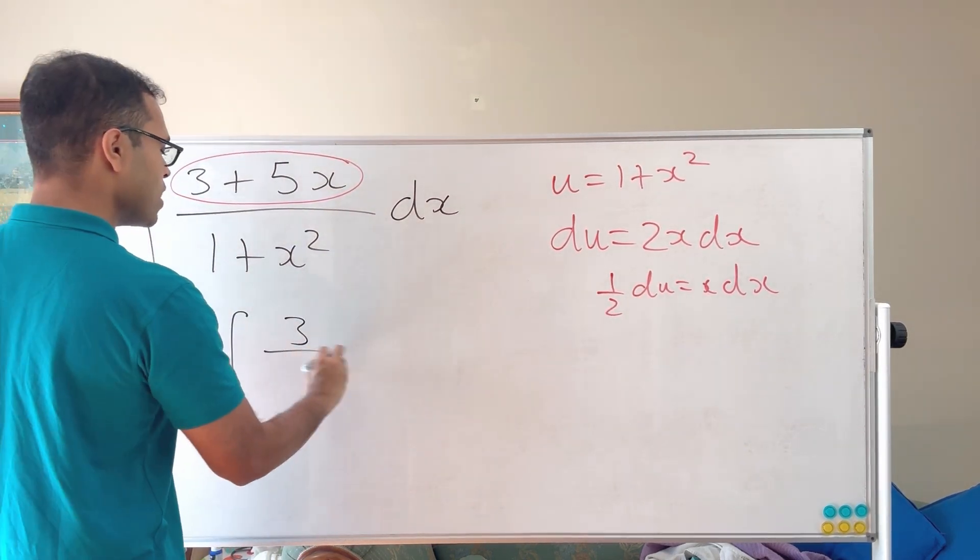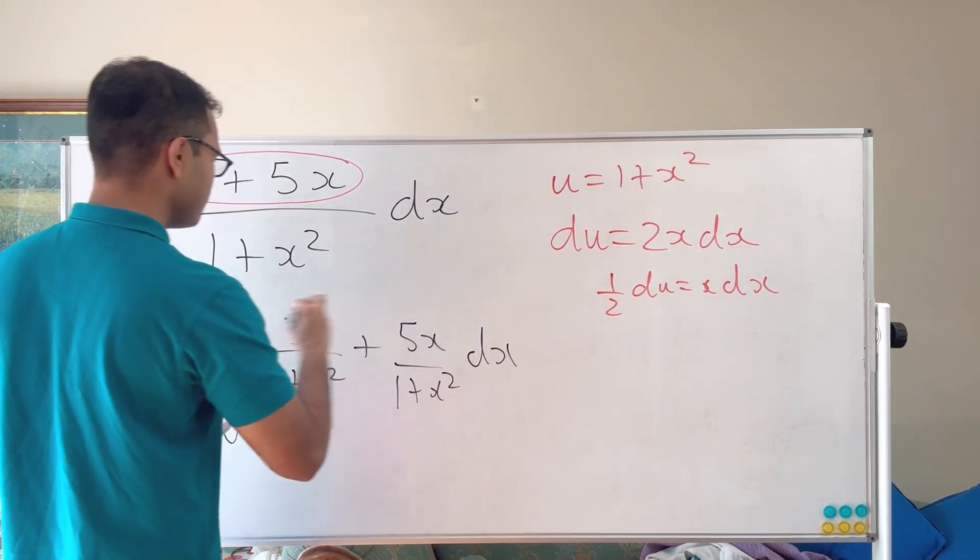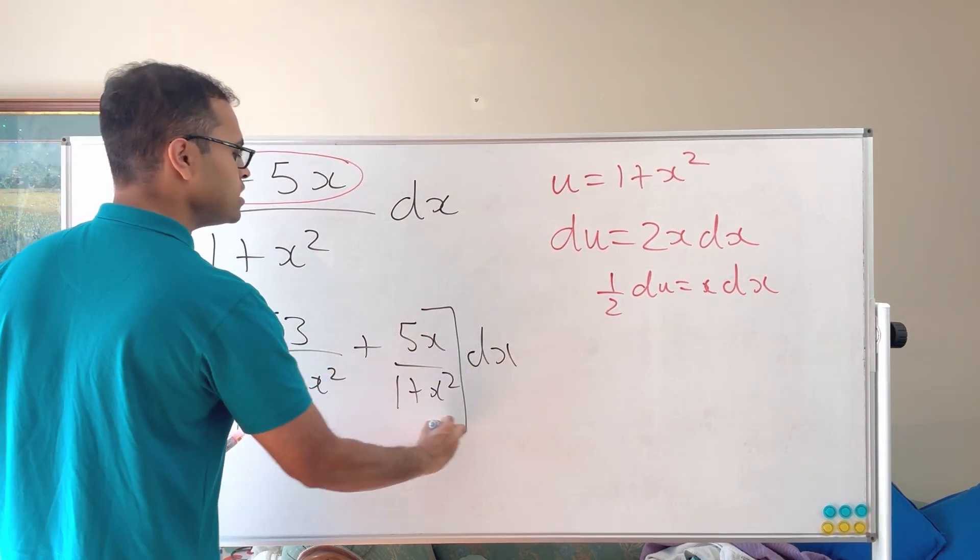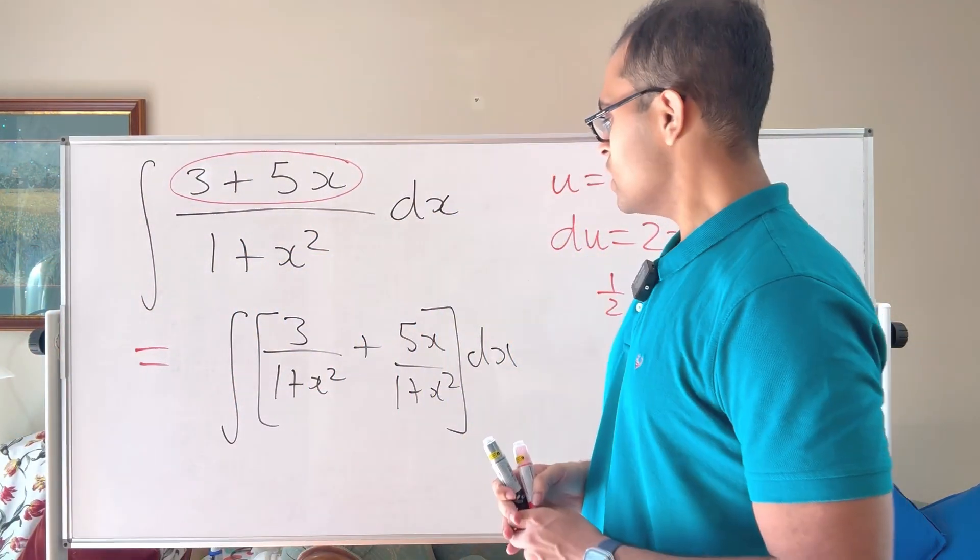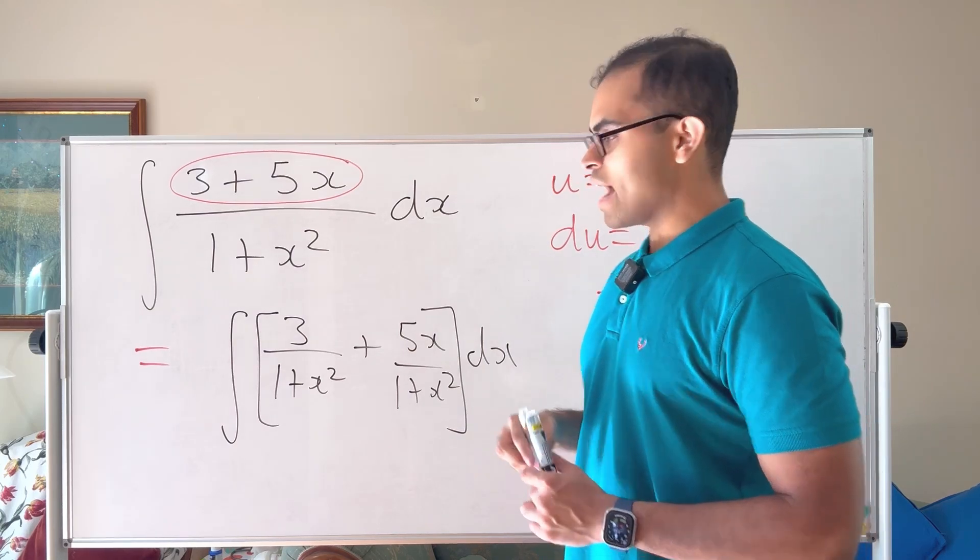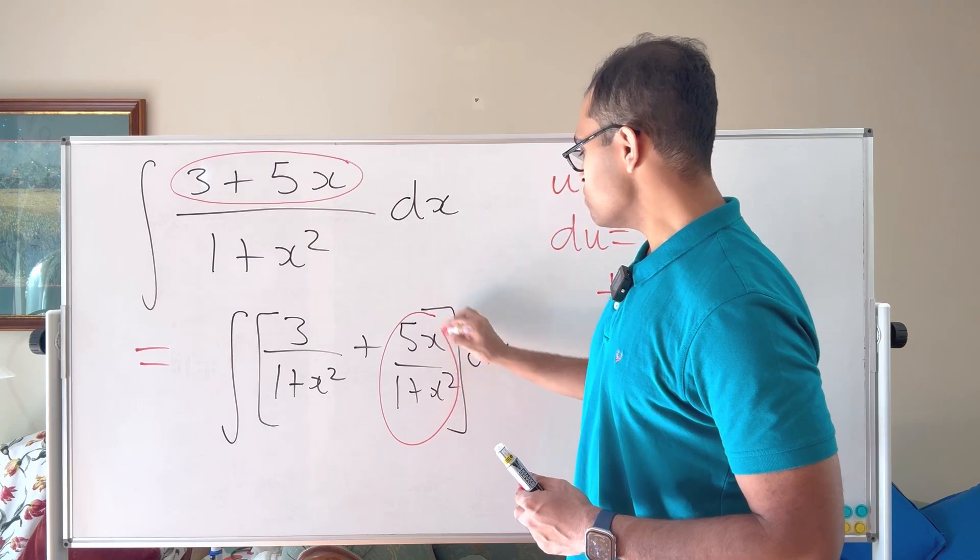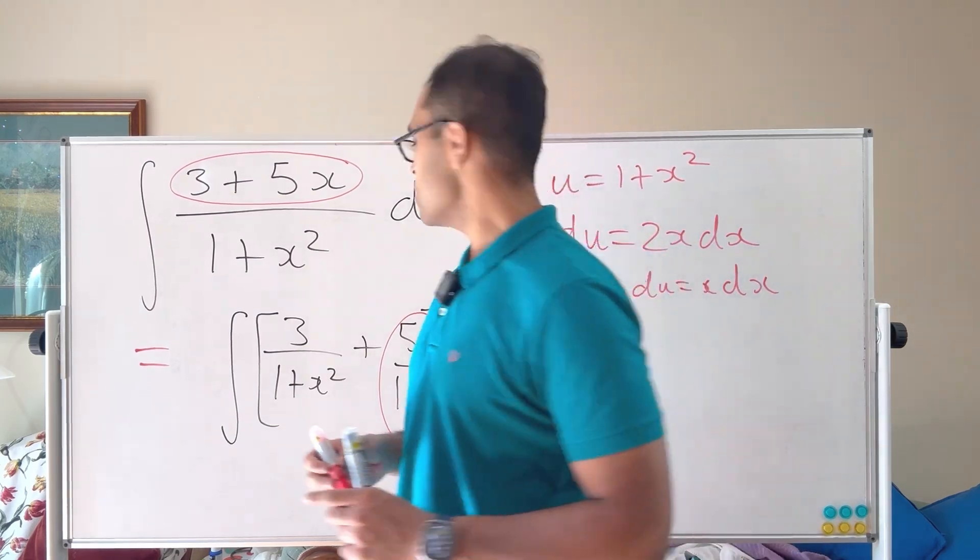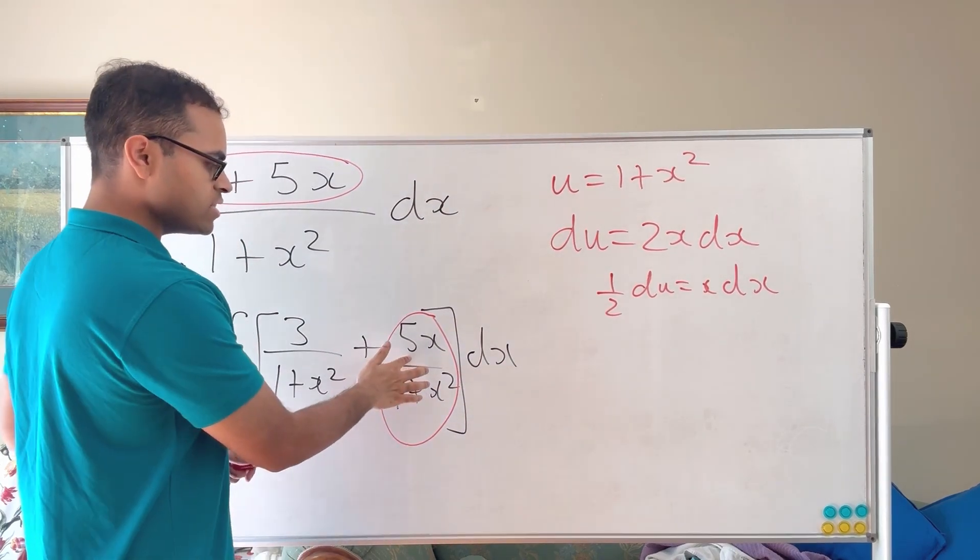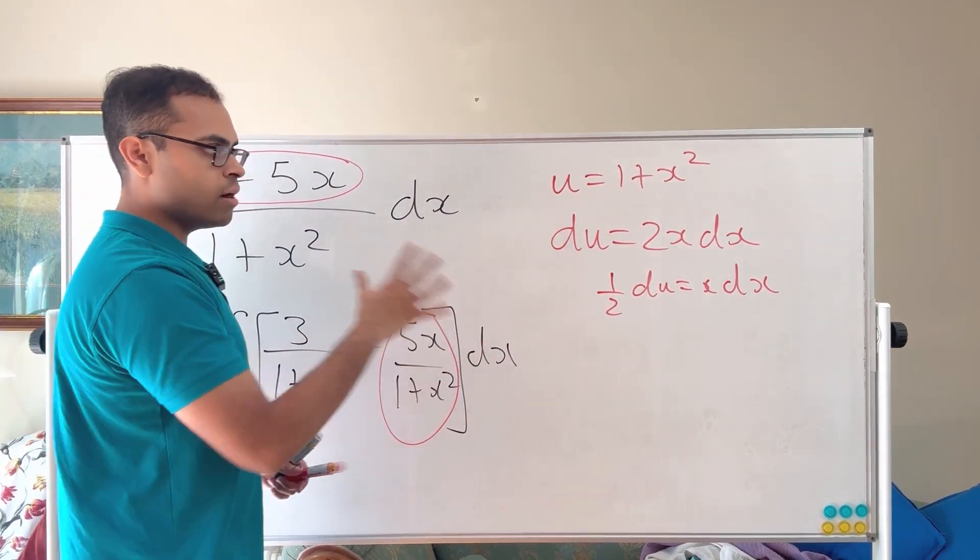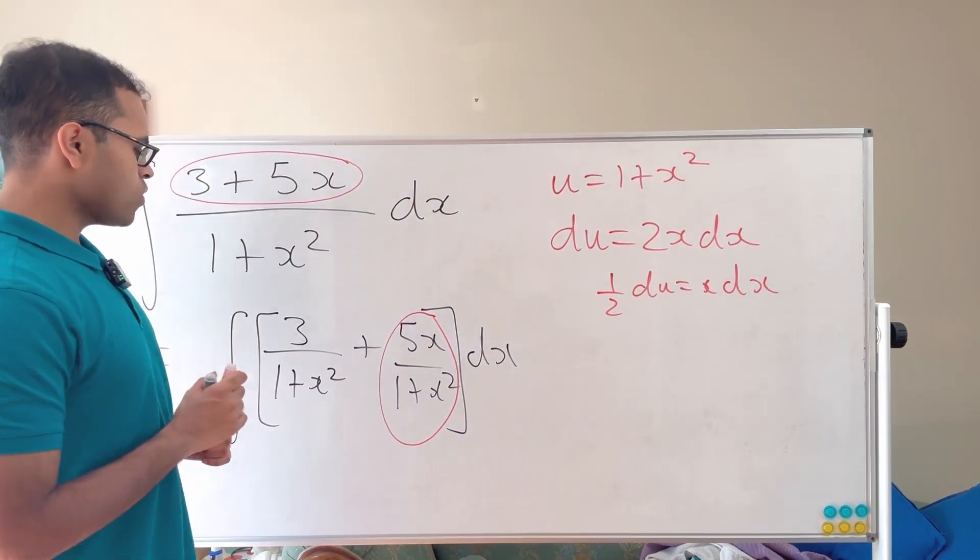But here we've got 3 by 1 plus x squared plus 5x by 1 plus x squared. And a big part of these integrals is just seeing the pattern or seeing the trick that you keep seeing in problems once you practice. So here we can sort of try integrating each piece separately. The 5x by 1 plus x squared will work with a u substitution because we can write the x dx as a constant times du. So then the 5 is a constant, so the whole thing should be possible to simplify with u. We'll get to that. But what about the 3 by 1 plus x squared?